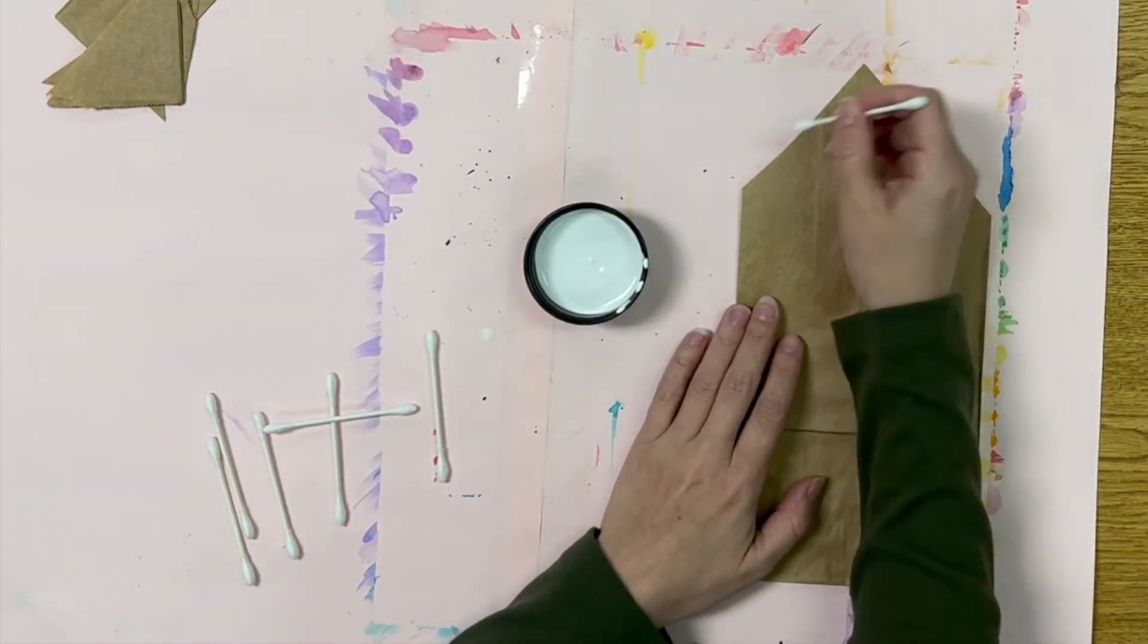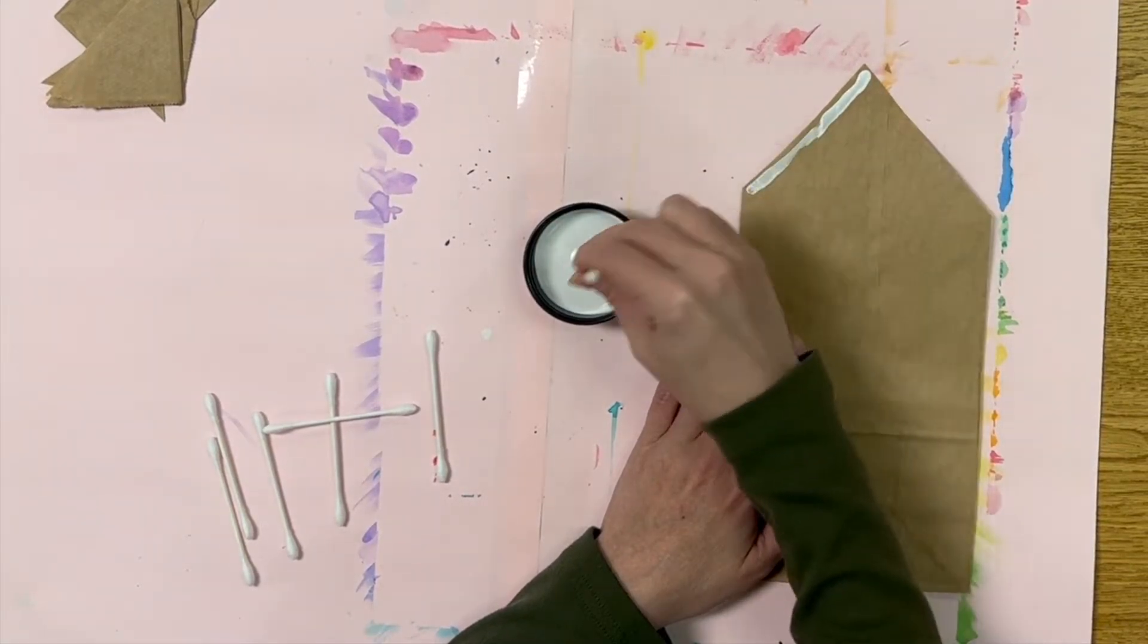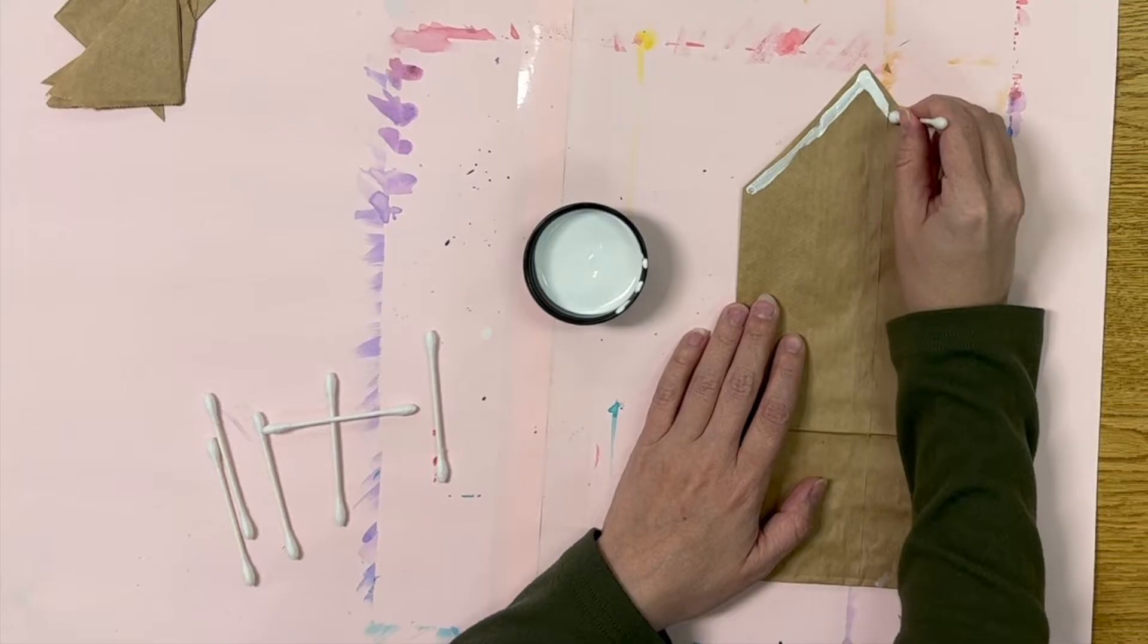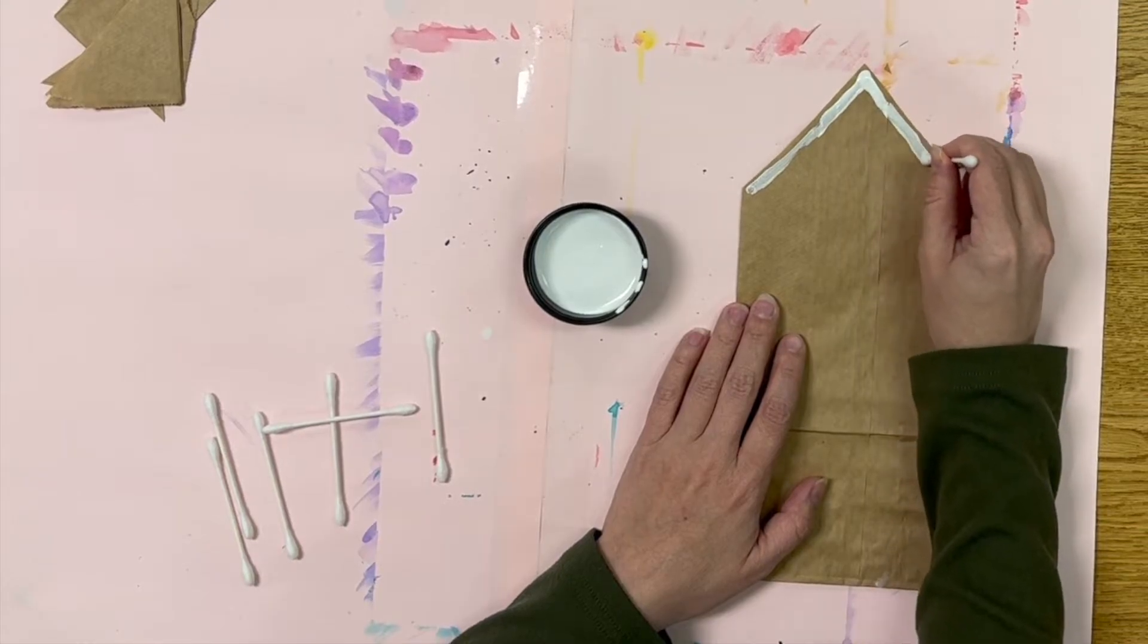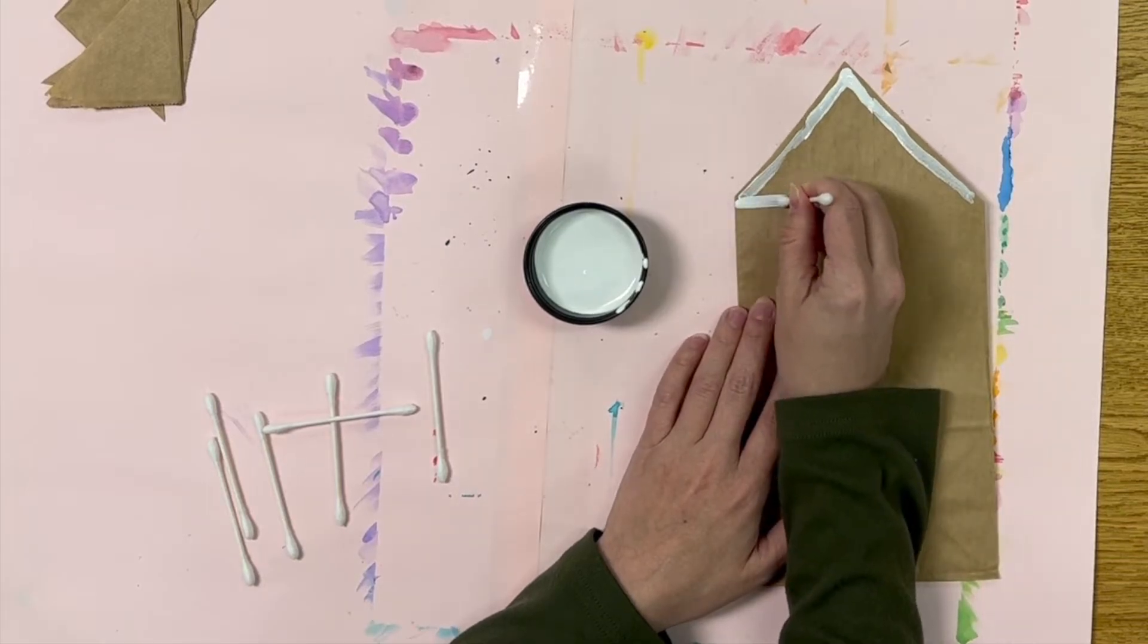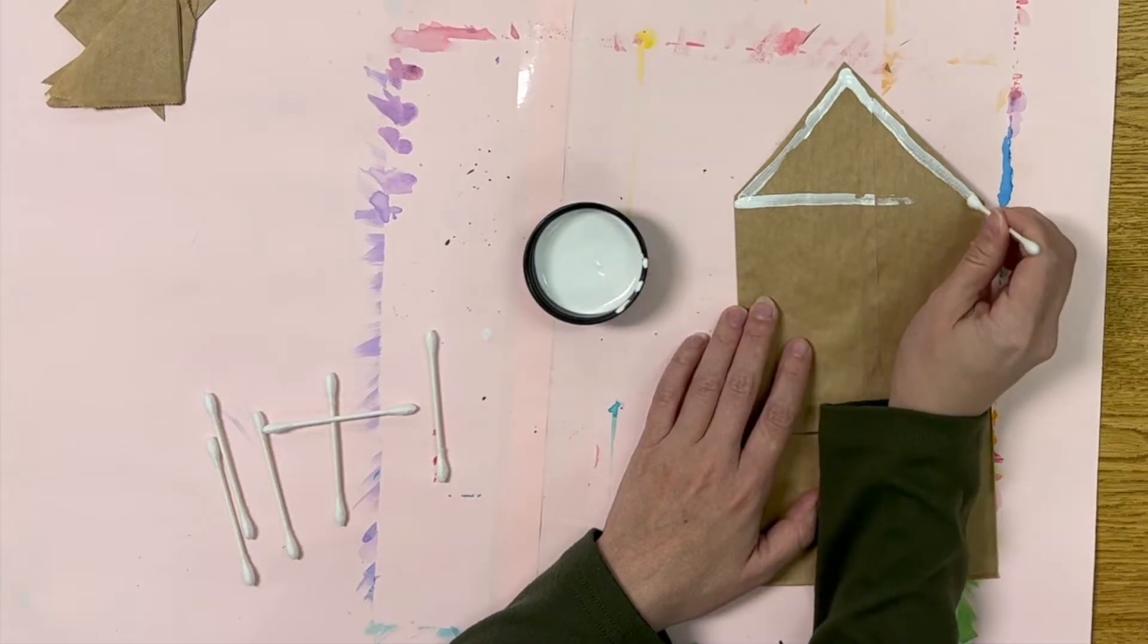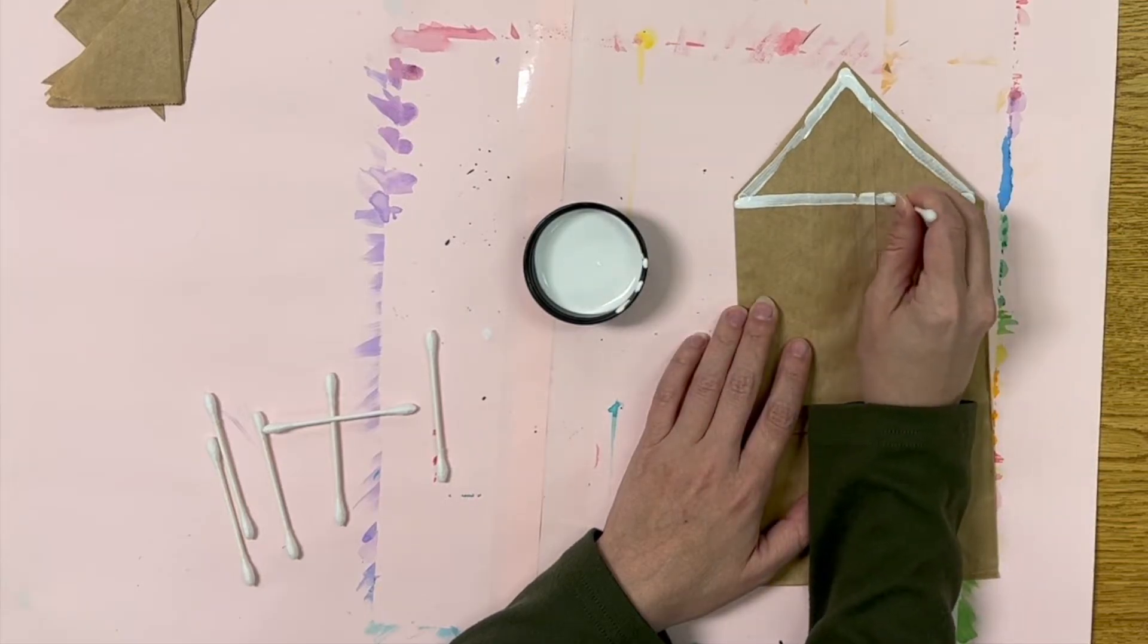For this project we will be using just white paint to make it look like the frosting that is often used on a gingerbread house. I will start by outlining my roof, but you can decide what kind of a roof you want to have. You could do one with icicles hanging down, maybe add some shingles to it, or maybe add some other drawings or designs. It is up to you to decide.